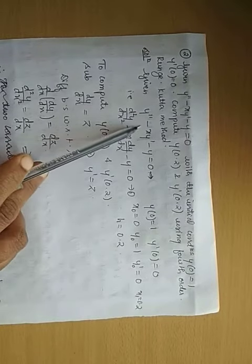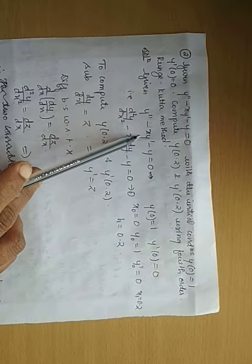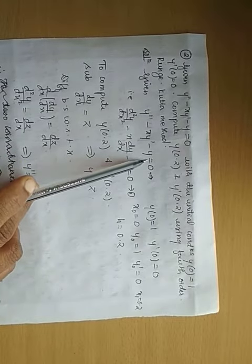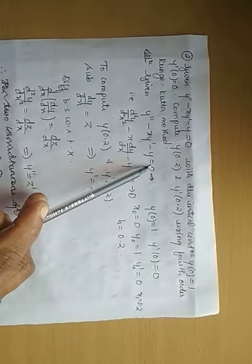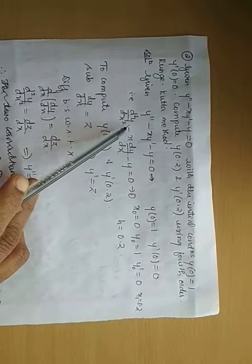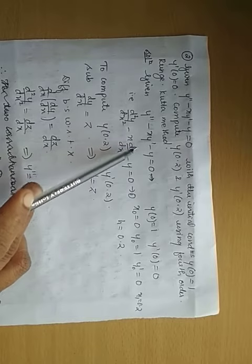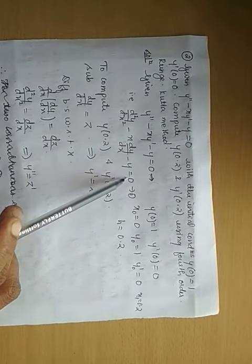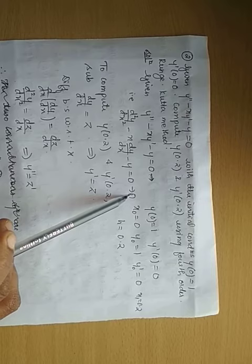So the very first step is take y double dash minus x y dash minus y equals 0. That is the given equation. y double dash means d square y by dx square, x as it is, y dash means dy by dx minus y equals 0. Mark it as equation number 1.